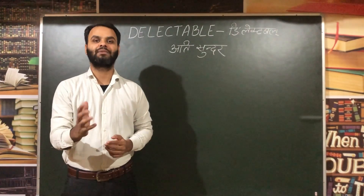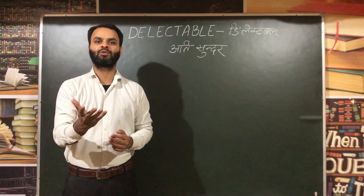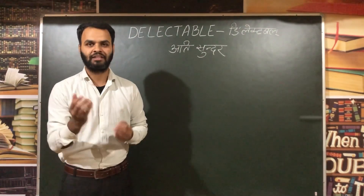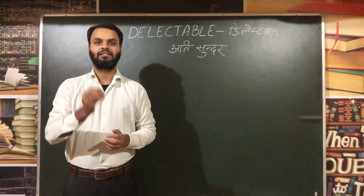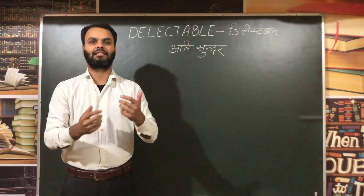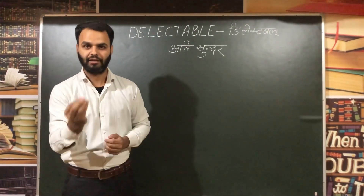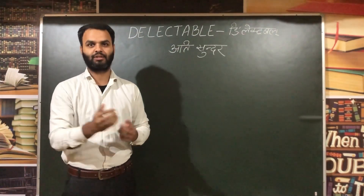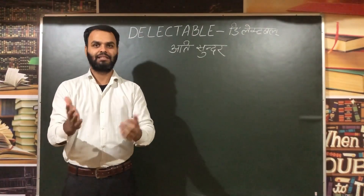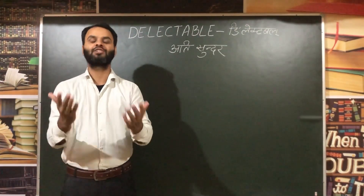The first word is Delectable, which means Ati Sundar (very beautiful). Let's break Delectable: Didi bought a table for 1,000,000 rupees. If you buy a table for 1,000,000 rupees, then it will be ati sundar. So, Delectable means ati sundar.